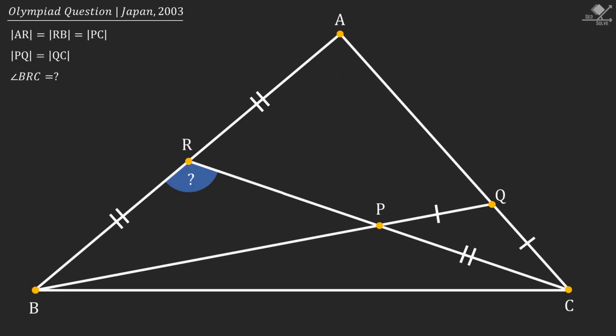In this Olympiad question, line segments AR, RB and PC are given to be equal. Also line segment PQ and QC have the same length. And we are asked the angle BRC.